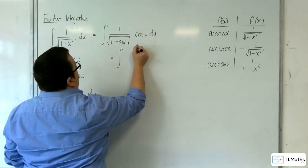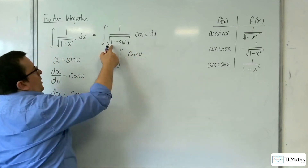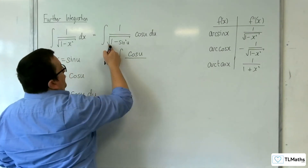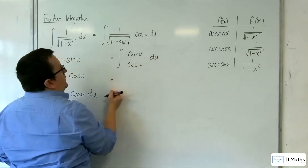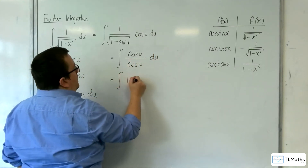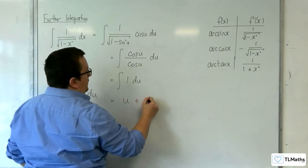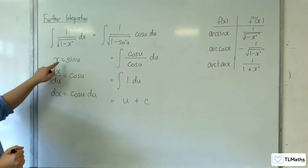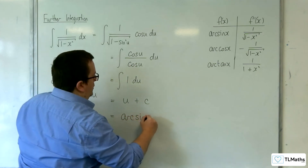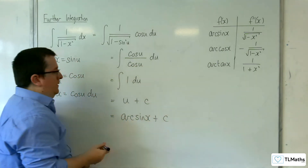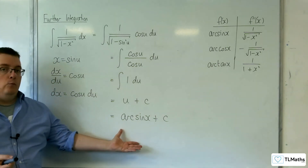We've got the cosine u in the numerator. And 1 minus sine squared we know is cosine squared, and the square root of cosine squared is, of course, cosine of u. So we've got the integral of 1 du, which is equal to u plus c. Now, if x is equal to sine of u, then u is equal to arc sine of x, plus c as the constant of integration. So we've arrived at what we expected to find.